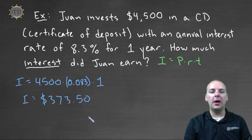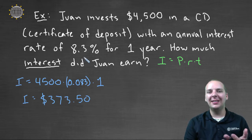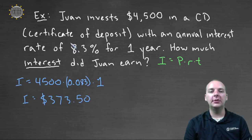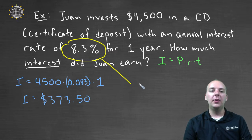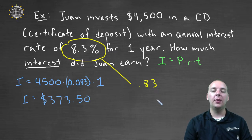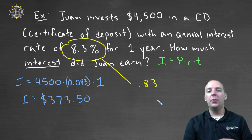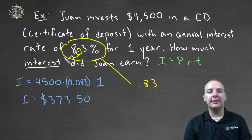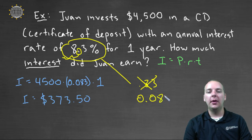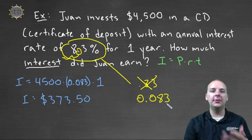One last comment: a very common mistake students make when they have single-digit interest rates like 8 or 8.3 is that when they convert it to a decimal, they write 0.83 — but that's incorrect. That would be like representing 83%, which will give you a completely wrong answer. Make sure to diligently move the decimal place twice to the left, so the interest rate would be 0.083. Other than that, this formula is very straightforward.